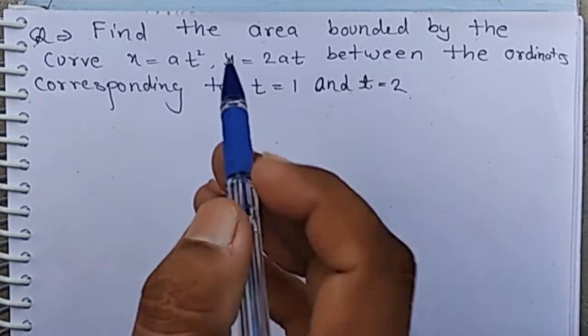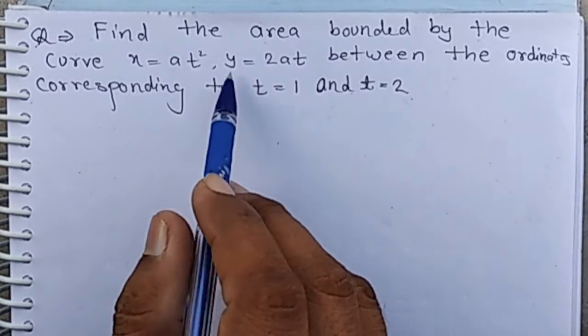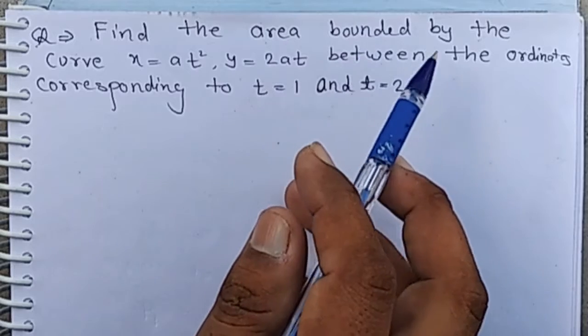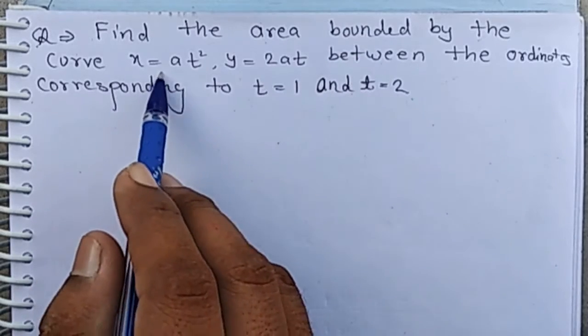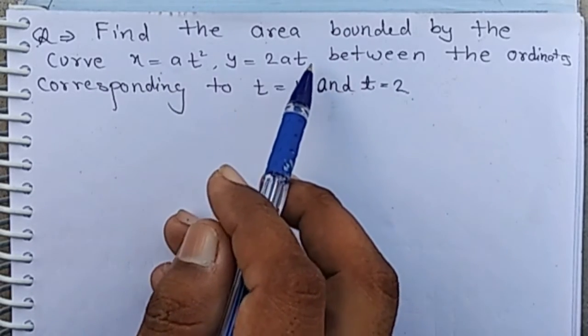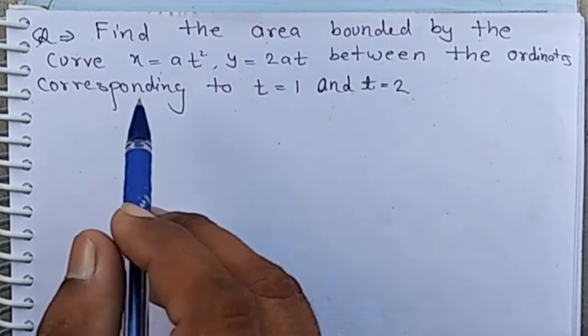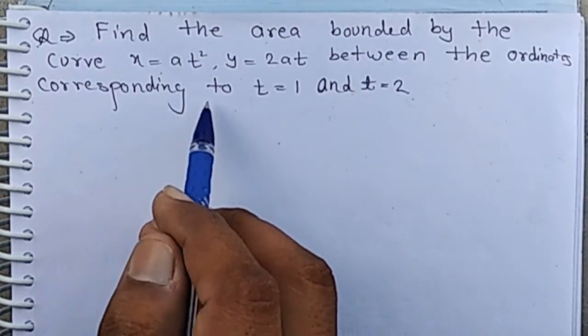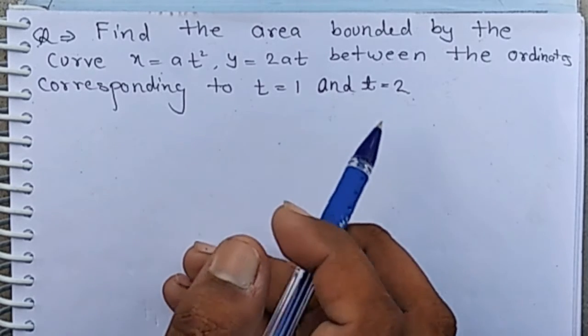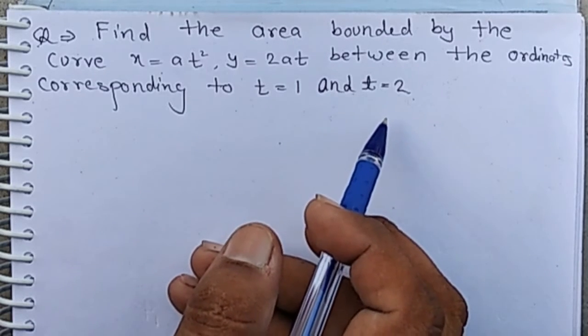Good morning class. Find the area bounded by the curve x equal at squared, y equal 2at, between the ordinates corresponding to t equal 1 and t equal 2.